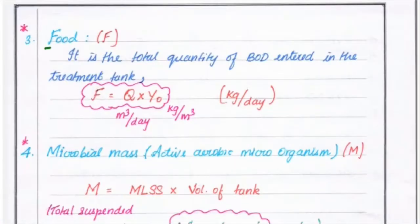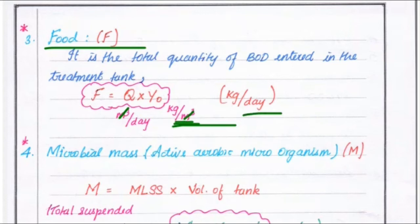The third parameter is food, F — the total quantity of BOD entered in the treatment tank. F equals Q into Y-naught, where Q is in meter cube per day and Y-naught is in kg per meter cube. The meter cube units cancel, so the unit of F is kg per day.